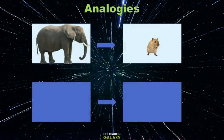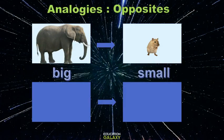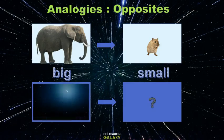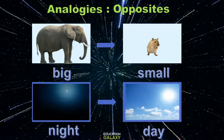Let's look at these two pictures — these are analogies of opposites, or antonyms: big and small. So the missing part has the same relationship. Night and day — these are opposites, the same way these are opposites, and they share the same kind of word relationship of antonyms.